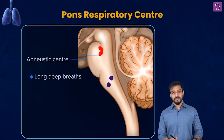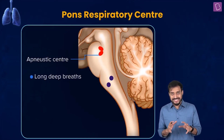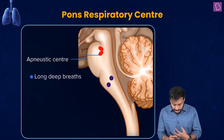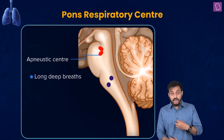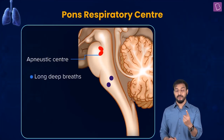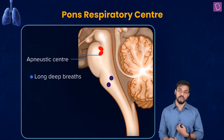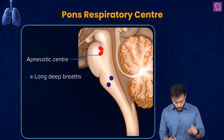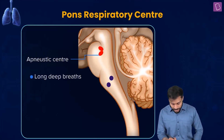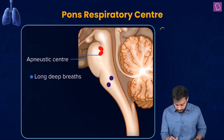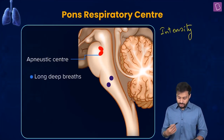Let's talk about the apneustic center. This center — the apneustic center of the pons respiratory center — helps in long deep breaths. If you're taking a long deep breath, what is coming into action is the apneustic center. It controls the intensity of breathing. Write it down — the apneustic center controls the intensity of the breathing.